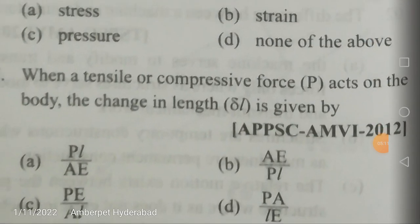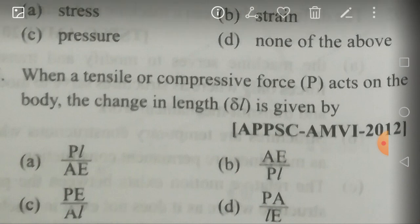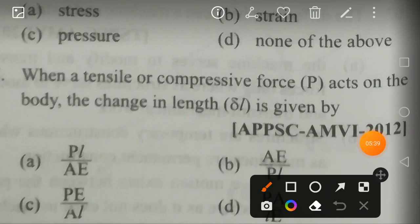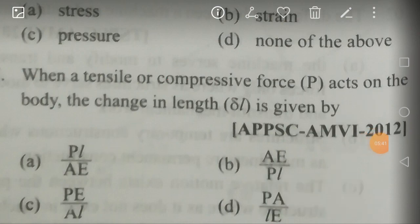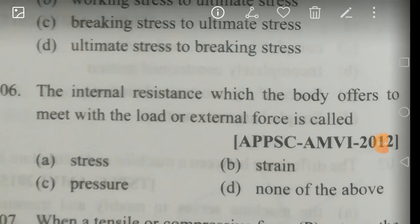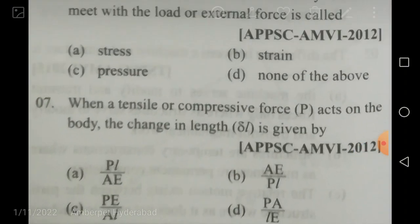When a tensile or compressive force acts on a body, the change in length δl is given by δl = PL/AE, where P is the applied load, L is the length of the member, A is the area of cross-section of the member, and E is Young's modulus. This is derived from strain = δl/L, stress = P/A, and Young's modulus = stress/strain.